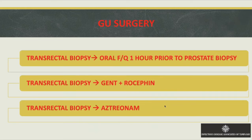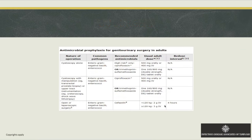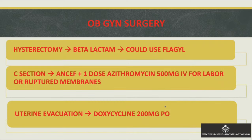For GU surgeries such as prostate biopsies, use oral fluoroquinolone one hour prior, or gentamicin plus ceftriaxone/aztreonam if penicillin allergic. For cystoscopy, prophylaxis is not routinely recommended unless the patient has a history of bacteremia related to cystoscopies, in which case Cipro or Bactrim can be used — though the choice depends on local antibiogram and E. coli resistance patterns.